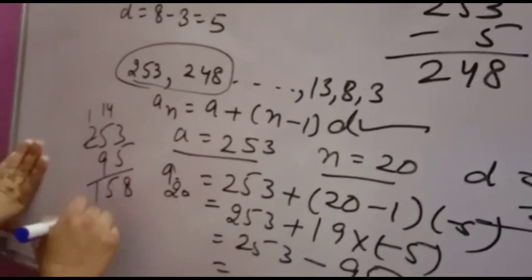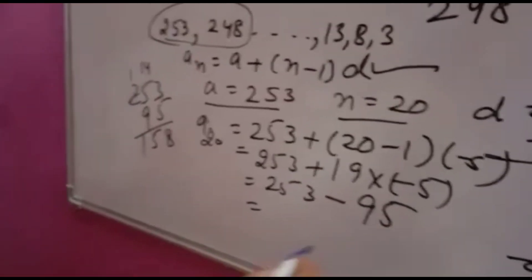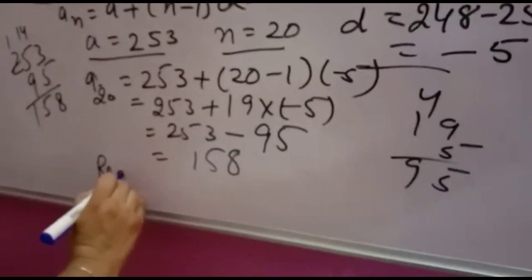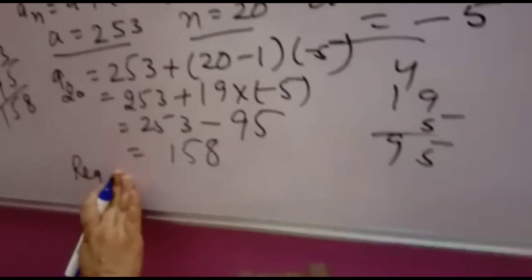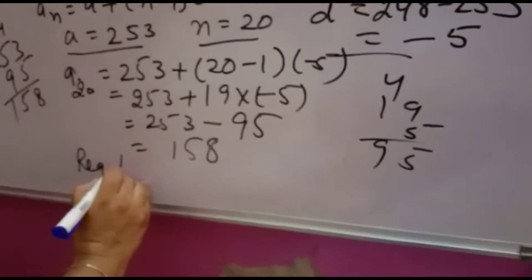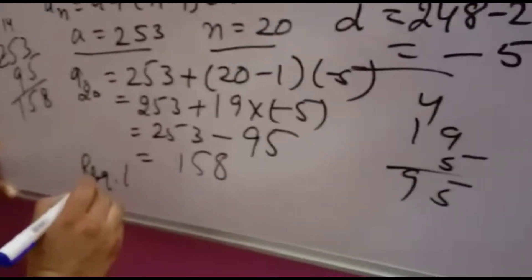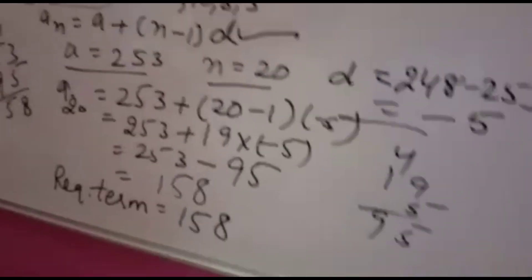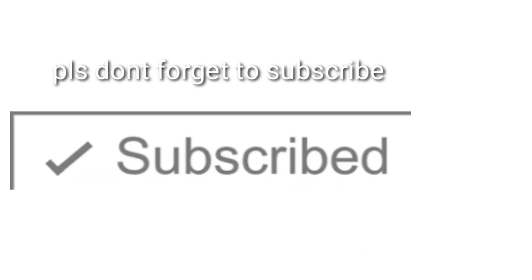So 253 minus 95. 153 minus 5, so 158. So the answer is 158.